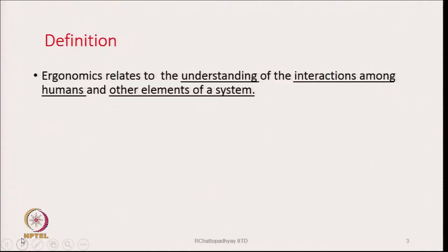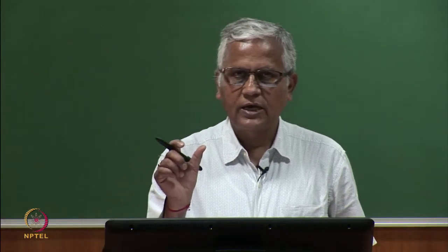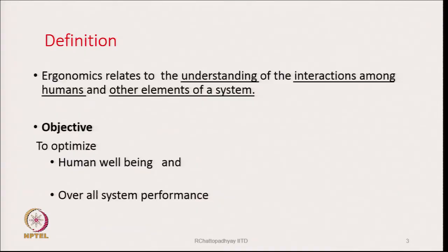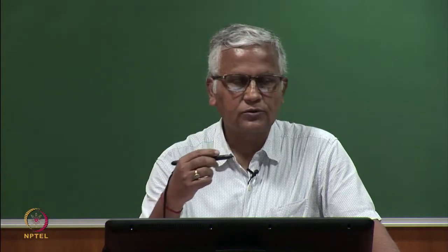What is the definition of ergonomics? Ergonomics relates to the understanding of the interaction among humans and other elements of a system. The objective is to optimize human well-being — whenever there is interaction between a human and external objects which the human is going to use, we must ensure that human well-being is taken care of.